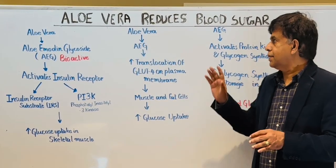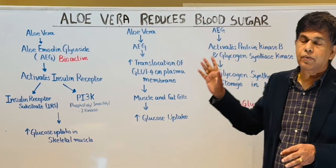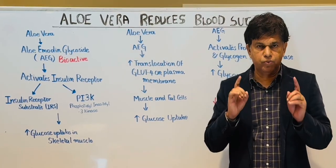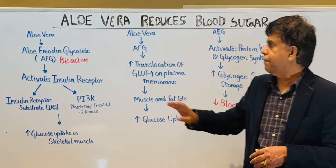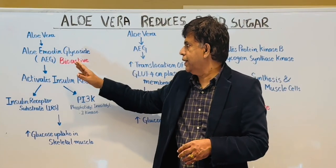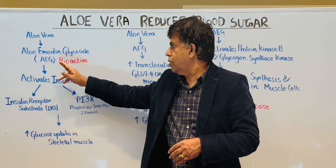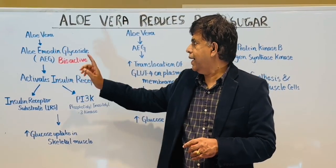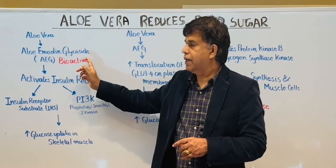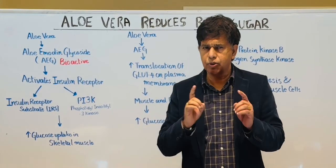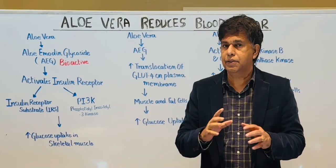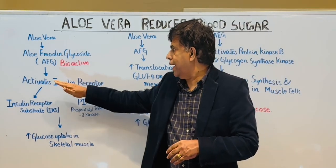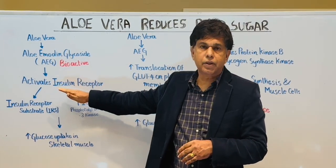There are three mechanisms by which aloe vera can decrease blood sugar. Let's look at the first one. In aloe vera, there's a compound called AEG — Aloemidine Glycoside. That is the most bioactive component of aloe vera. It activates the insulin receptor.